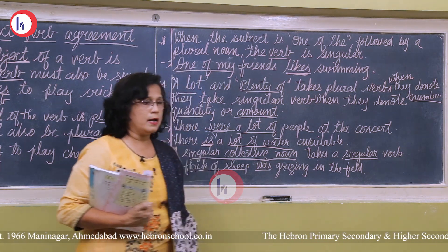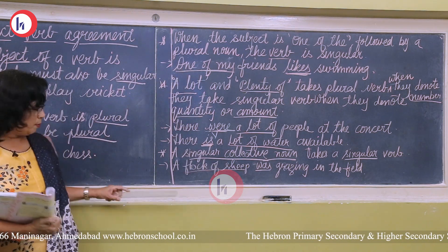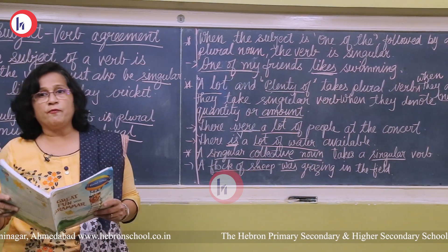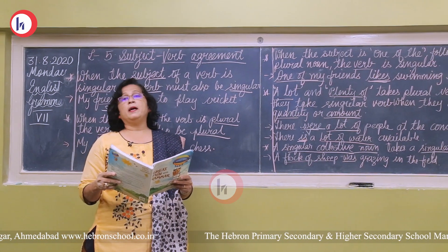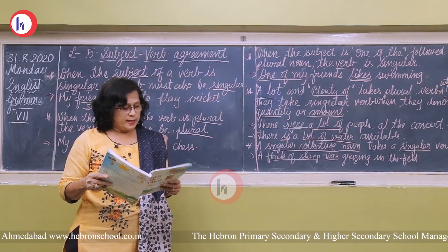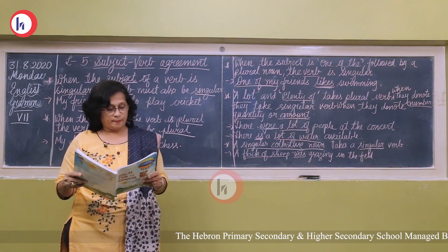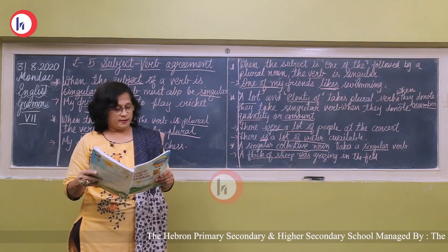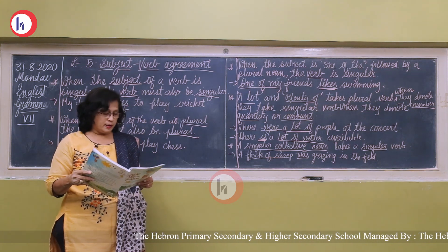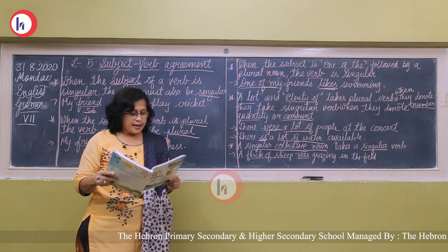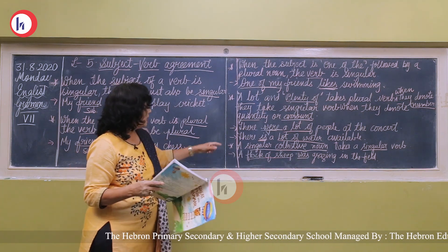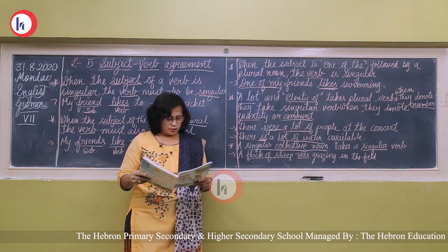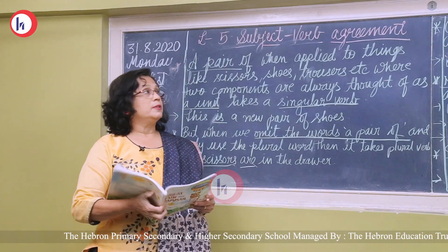A singular collective noun takes a singular verb. For example, 'there was a crowd of people in the street' — 'crowd of people' is a collective noun, so we use 'was,' not 'were.' Similarly, 'a gang of thieves was...' uses 'was,' and 'a new board of directors has been elected' uses 'has,' not 'have.'